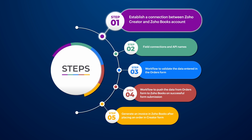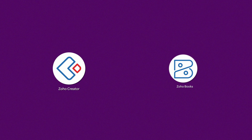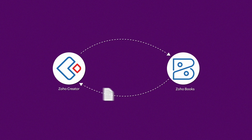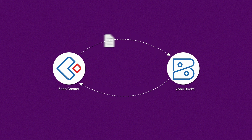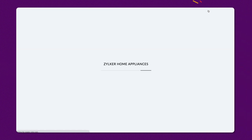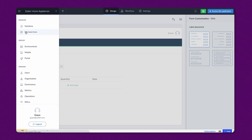The first step will be creating a connection to exchange order details between Zoho Creator and Zoho Books. Connections let you integrate and seamlessly exchange data between Zoho Creator applications with other Zoho and third-party cloud services. To create a connection, go to the editor and choose Microservices.